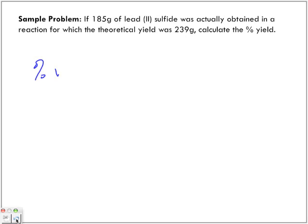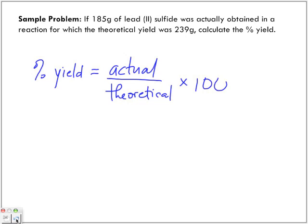So we have to get the percentage yield. Percentage yield is equal to actual over theoretical times 100. So, what is the actual?